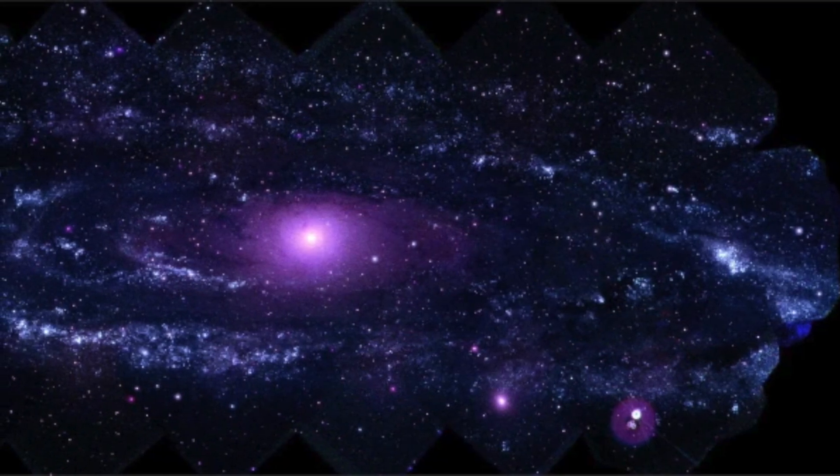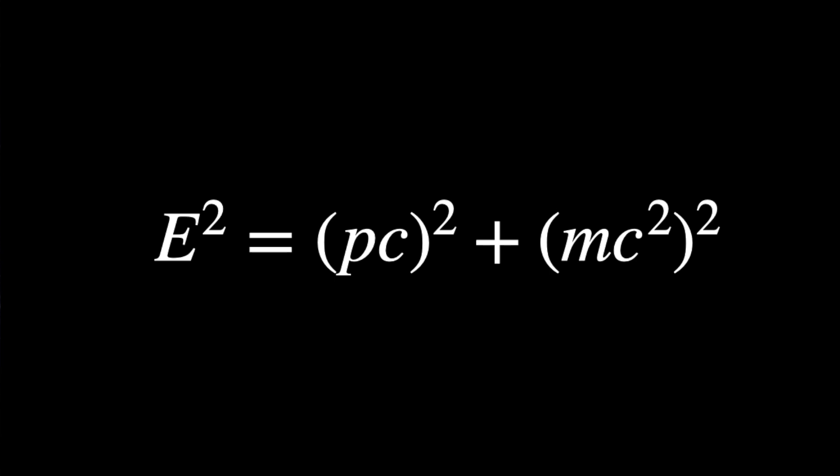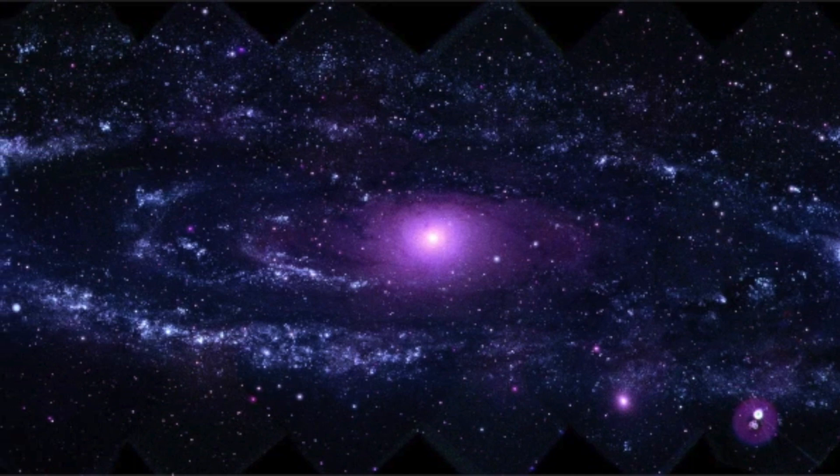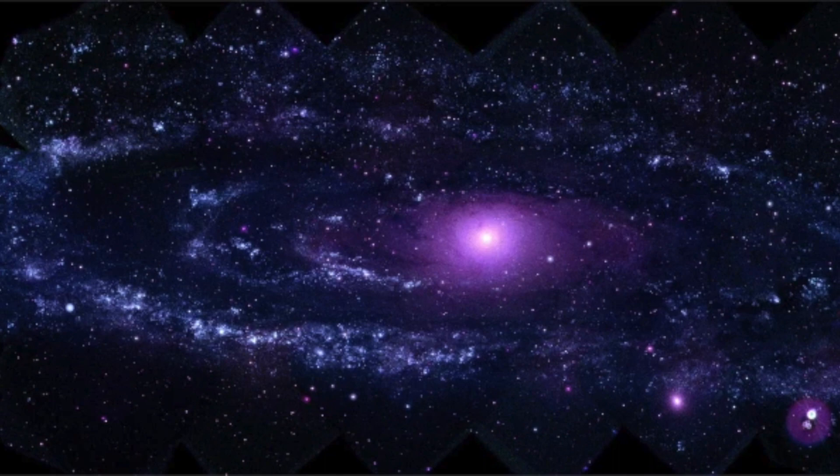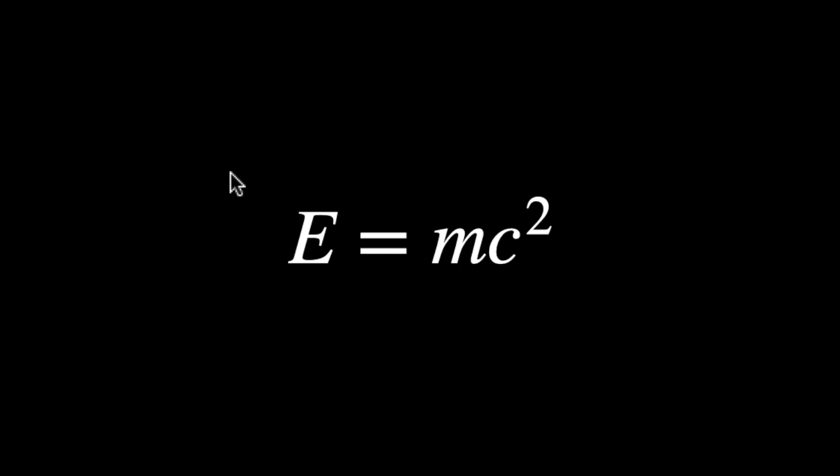The more modern and complete version of the equation is given by the following. This is more complete because it can be used for both particle with mass and without mass. However, for the purpose of this presentation, we are going to stick to the simpler and more traditional form, which is E is equal to mc square.